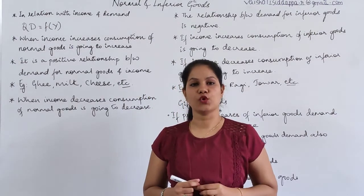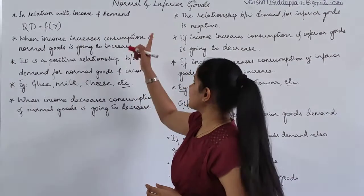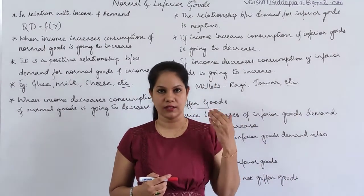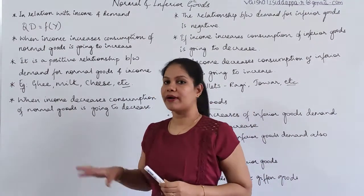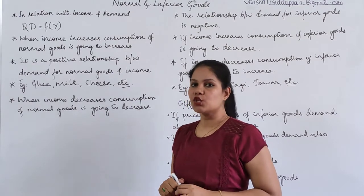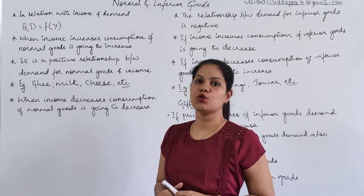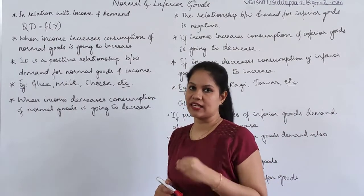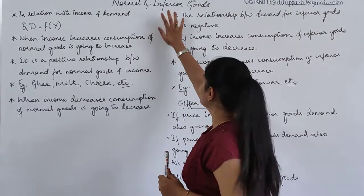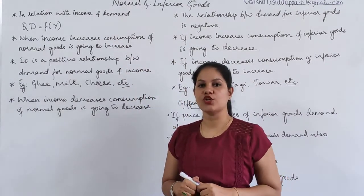The second determinant which is going to influence demand is income. In the next class I will cover price of related goods, but for now we will stick to the second determinant — income. The question here is: what is the difference between normal goods and inferior goods? This is a four mark question.